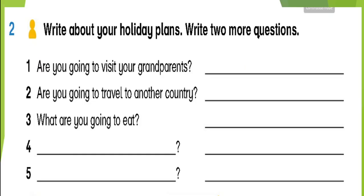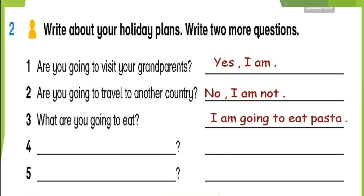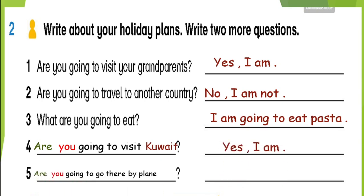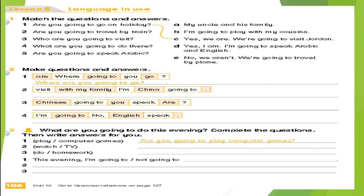Let's read activity two in your pupils book page 128: write about your holiday plans and write two more questions. Question one: 'Are you going to visit your grandparents?' — for example, 'Yes, I am.' Number two: 'Are you going to travel to another country?' — 'No, I'm not.' 'What are you going to eat?' — for example, 'I'm going to eat pasta.' We can add two more questions: 'Are you going to visit Kuwait?' — 'Yes, I am.' 'Are you going to go there by plane?' — 'Yes, I am.'